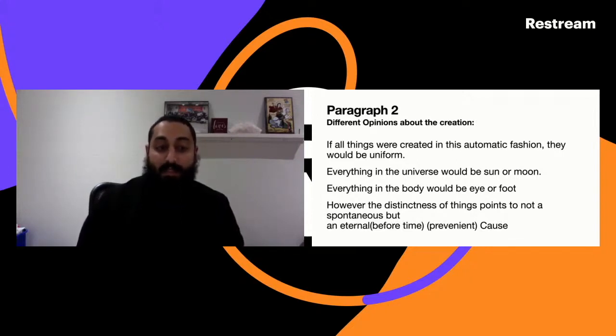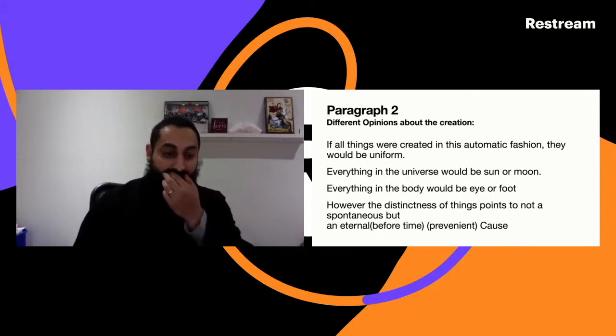However, the distinctness of things points to not a spontaneous but an eternal and prevenient cause. The fact that things are not the same, things are different and unique and distinct, points to not something spontaneous and random but something that is laid out and thought out. It has been thought out before time - prevenient is before time - and eternal.